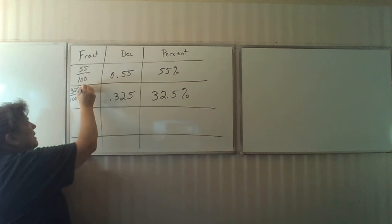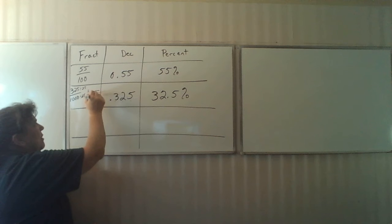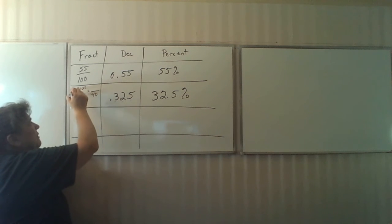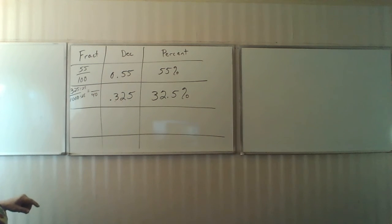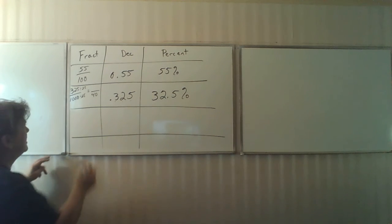Divide top and bottom by 25. That's going to give me 40 on the bottom. 25 into 325 goes, let's see, 4, 8, 12, 13 times.